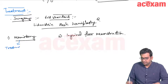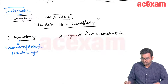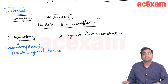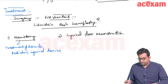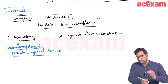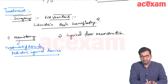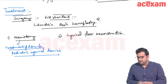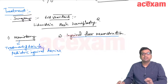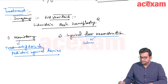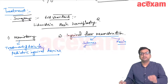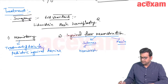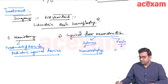Herniotomy is the treatment of choice for pediatric inguinal hernias. The steps of herniotomy: first incise the skin and subcutaneous tissue; then incise Camper's fascia and Scarpa's fascia; then open the external oblique aponeurosis to expose the cord structures. Inguinal floor reconstruction after herniotomy can be done with sutures (herniorrhaphy) or with mesh (hernioplasty).